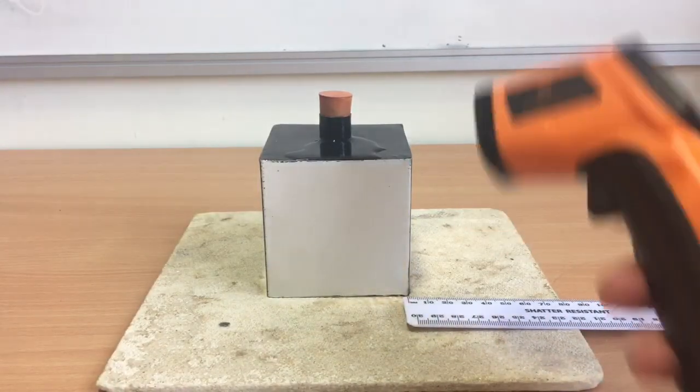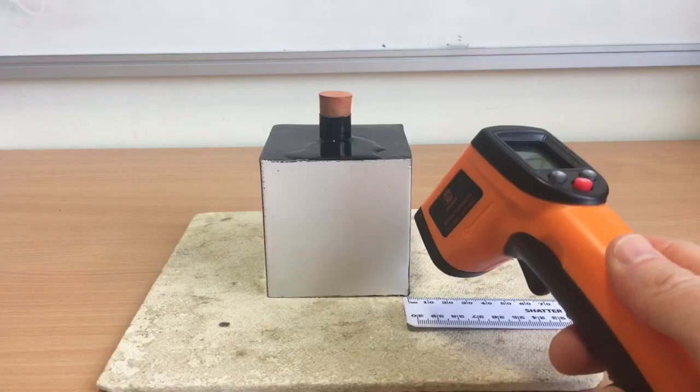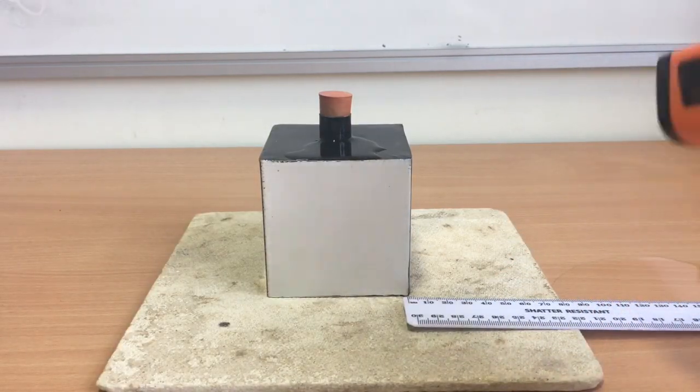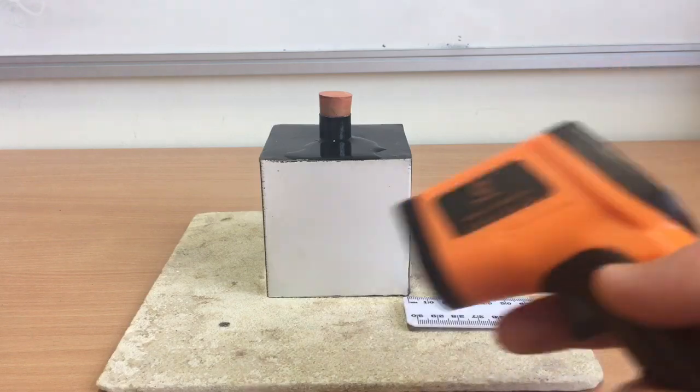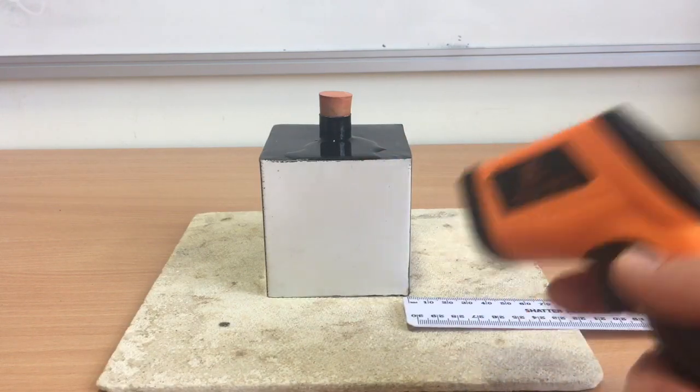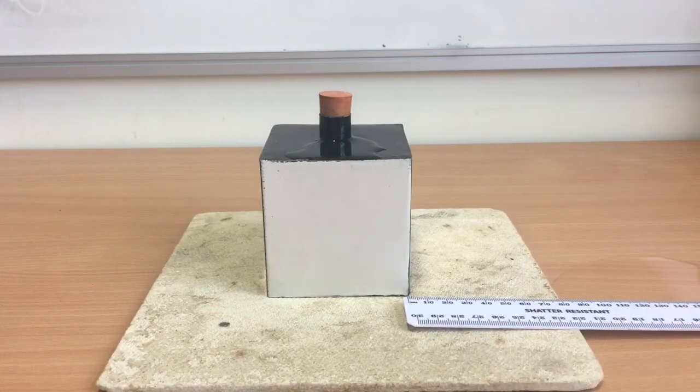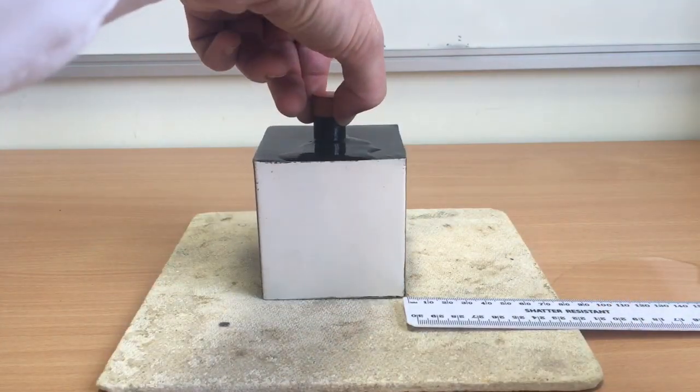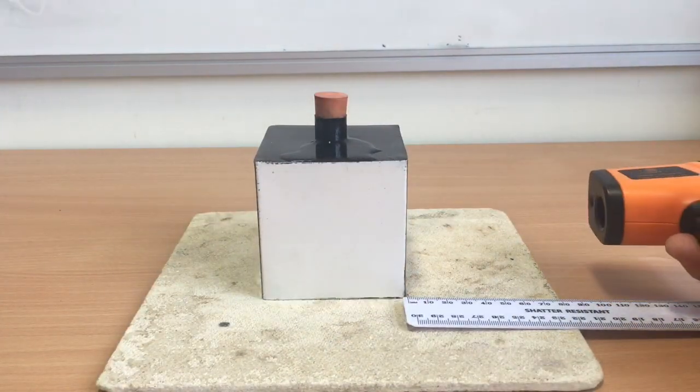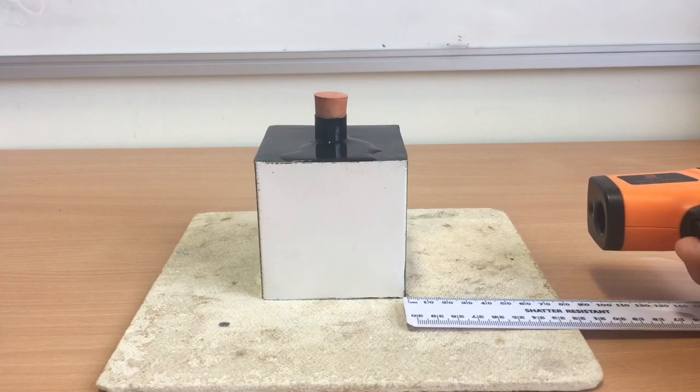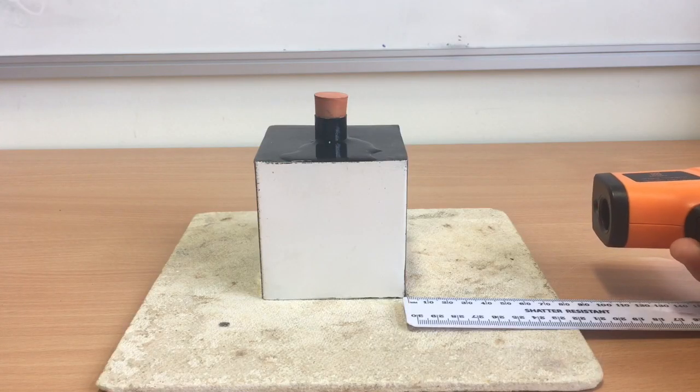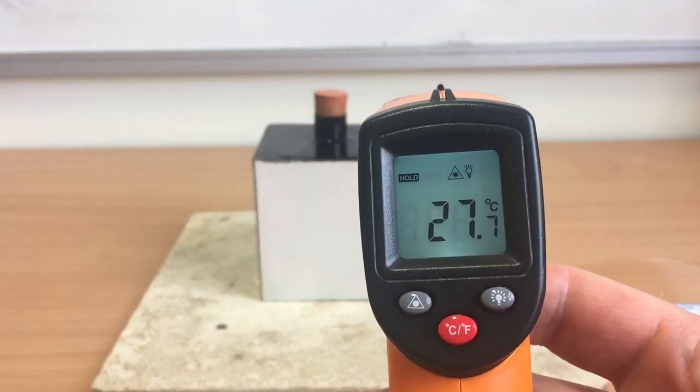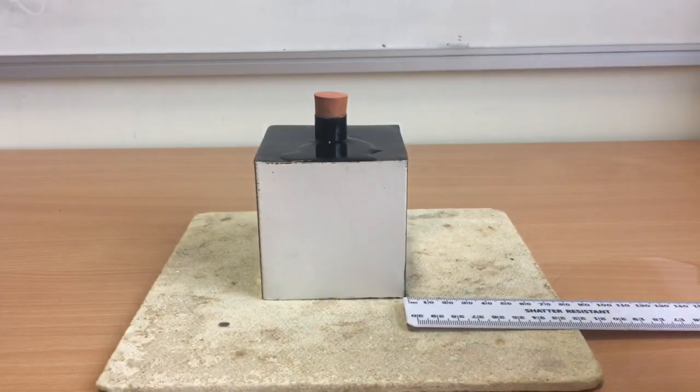So the distance that the infrared detector is from the Leslie Cube will affect our results. So if we want to keep this a fair test, we've got to make sure we measure from the same distance for each side. So I'm going to use 10 centimetres. I'm going to start, I'm going to be measuring this side, which you can see is the shiny side. I take the infrared detector to 10 centimetres. And we take a reading, which is 27.7 degrees Celsius. So we'd record that in a results table.